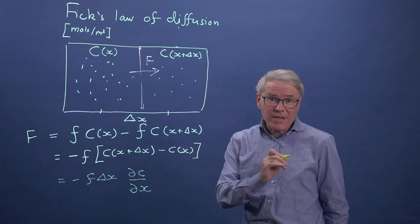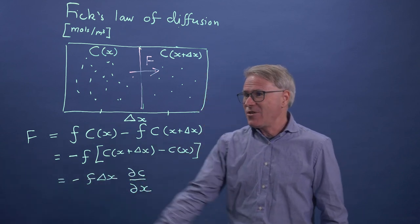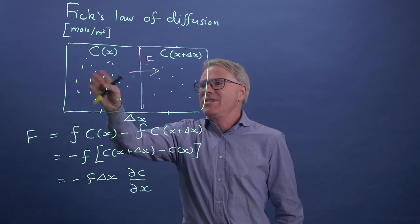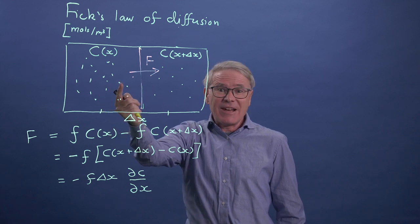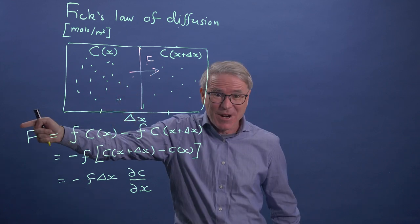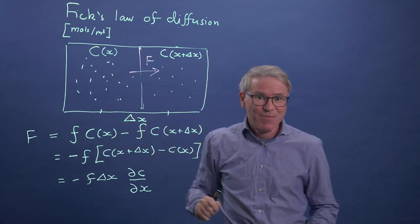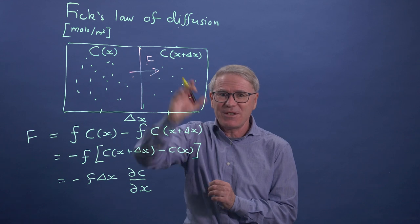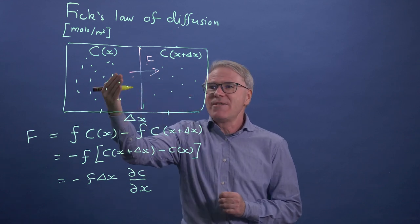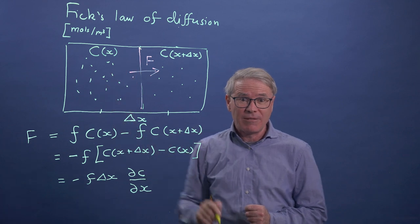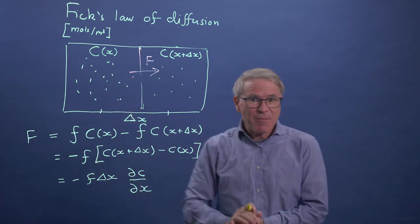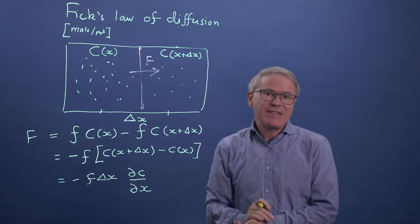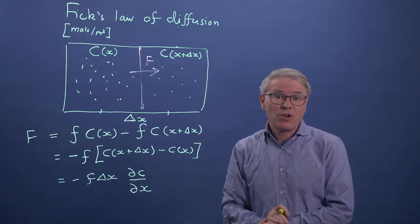We can write it in a different way if we like. We can write it as minus F C of X plus delta X minus C of X. And then if we assume that this is a small difference, we can write this as minus F delta X dC dx. Now the key point here is that the net flux, even though this is a random motion, so the particles are just as much likely to move this way as this way, but just some fraction moves across my boundary where I'm defining flux.